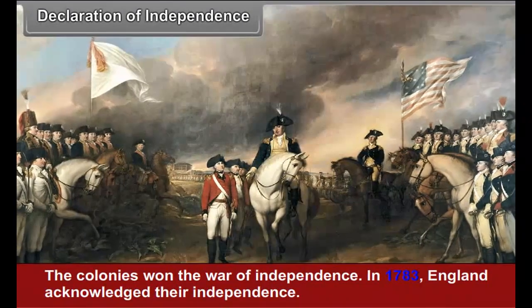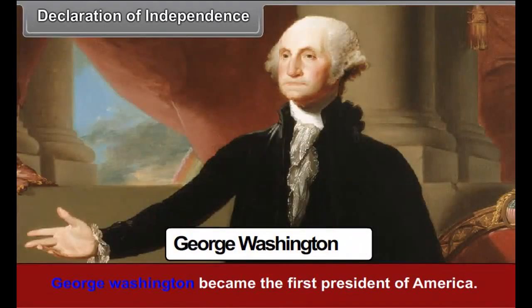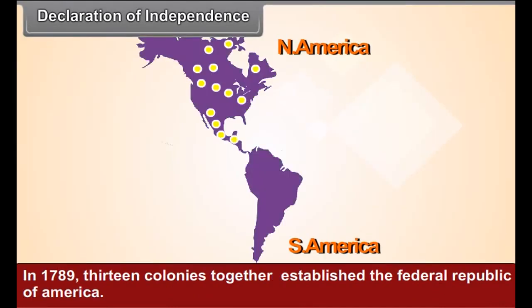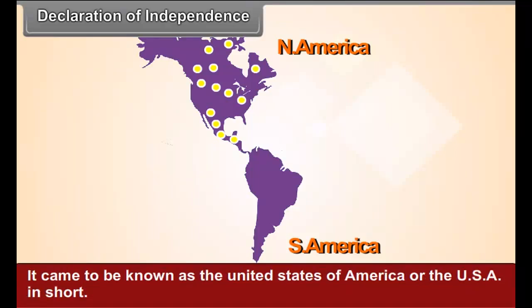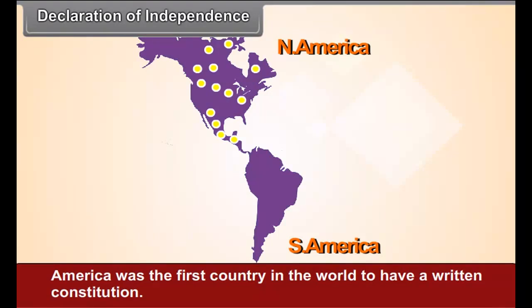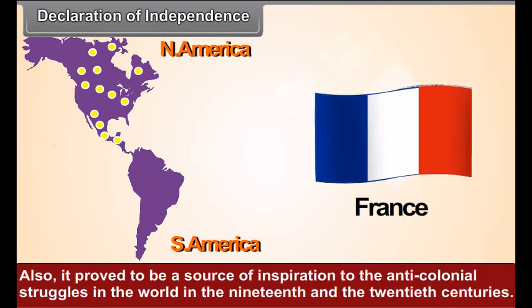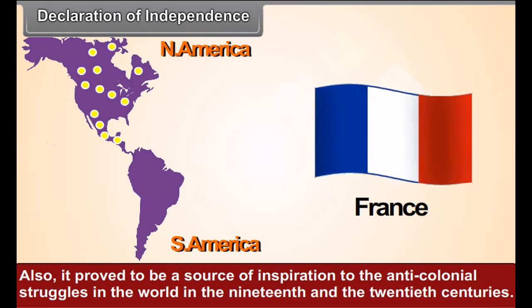The colonies won the War of Independence. In 1783, England acknowledged their independence. George Washington became the first President of America. In 1789, the 13 colonies together established the Federal Republic of America, which came to be known as the United States of America, or the USA. America thus became the first Federal Democratic Republic and the first country in the world to have a written constitution. The American War of Independence provided inspiration to the revolutionaries in France and to the anti-colonial struggles of the 19th and 20th centuries.